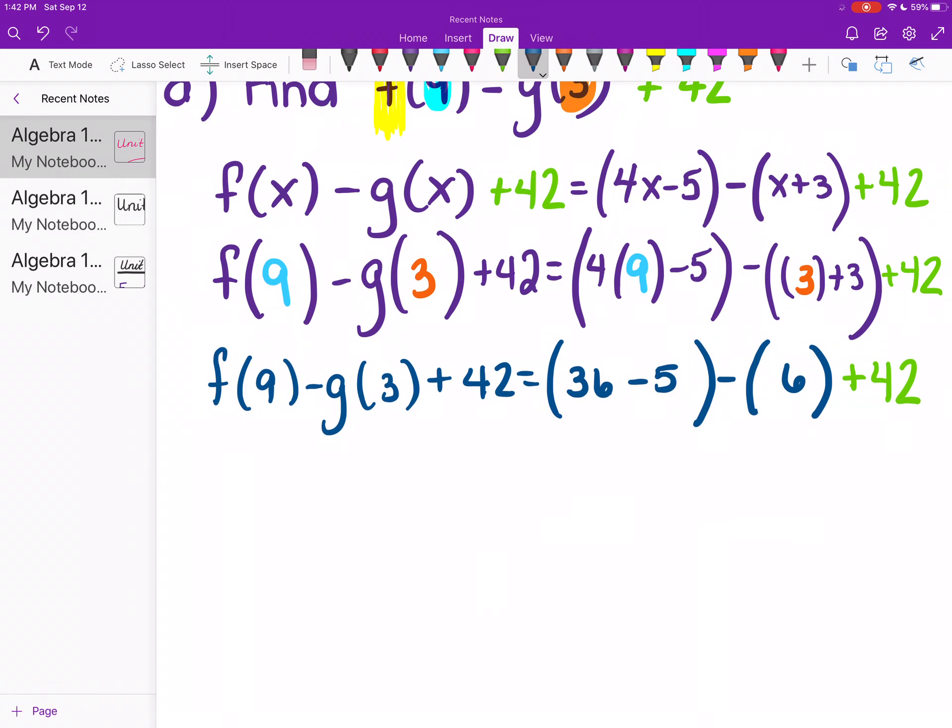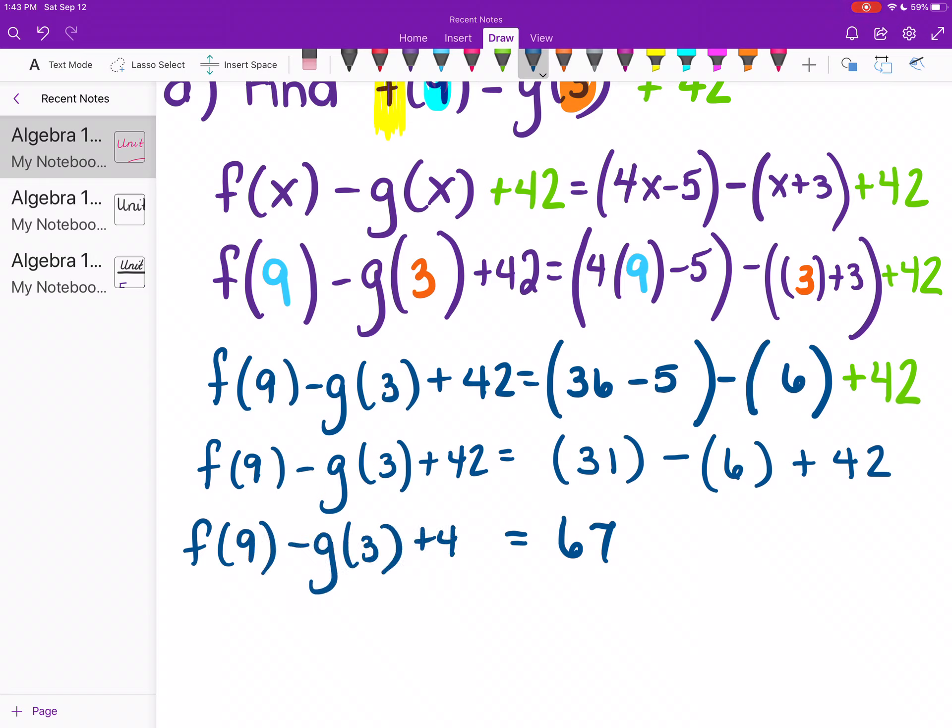All right. Rewrite the left-hand side. f(9)-g(3)+42 equals 36 minus 5. 36 minus 5 is 31. If you're not sure, keep the parentheses for now. Minus 6 plus 42. And when you put that, you will get 67. So f(9)-g(3) plus 42 equals 67.